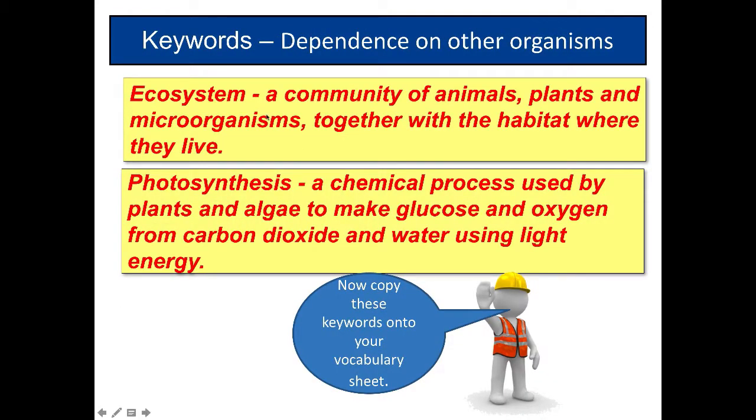Two keywords: An ecosystem is a community of animals, plants, and microorganisms together with the habitat where they live. Photosynthesis is a chemical process used by plants and algae to make glucose and oxygen from carbon dioxide and water using light energy.